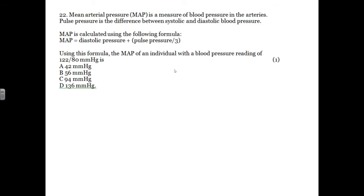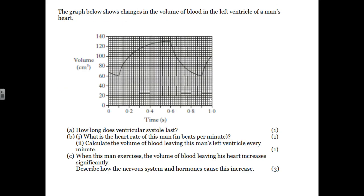Mean arterial blood pressure is the blood pressure in the arteries. The pulse pressure is the difference between systolic and diastolic blood pressure. MAP is calculated using the following formula: it's the diastolic plus the pulse pressure over 3. So using the formula, the MAP of an individual with a blood pressure reading of 122 over 80 is... So 80 plus 122 minus 80 over 3. So that must be 14 times 3 is about 42. So 80 plus 42 over 3 is 94, which is C.